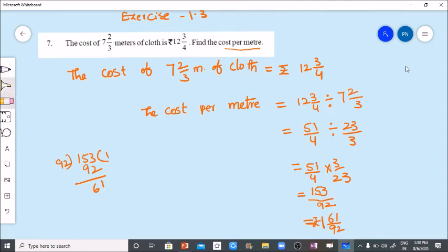This is the cost of the 1 meter cloth. That is 1 rupee 61 by 99.